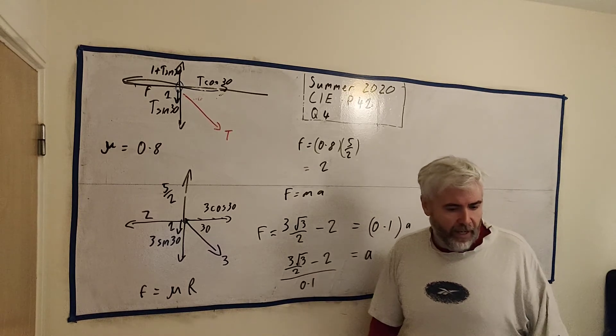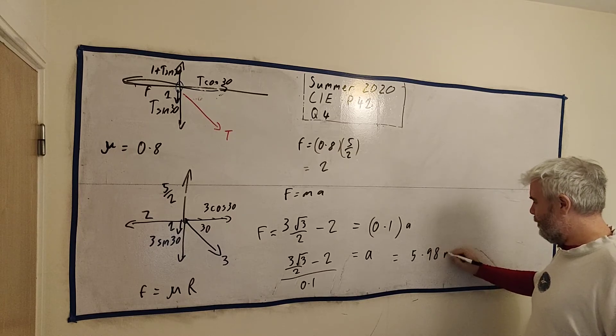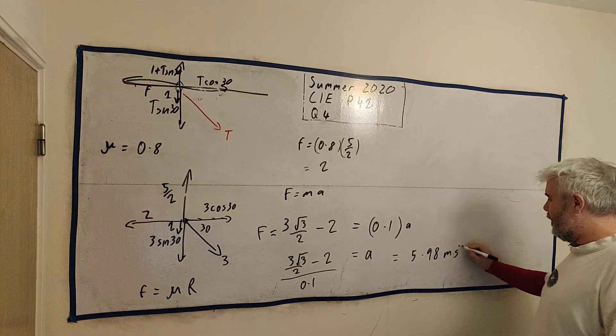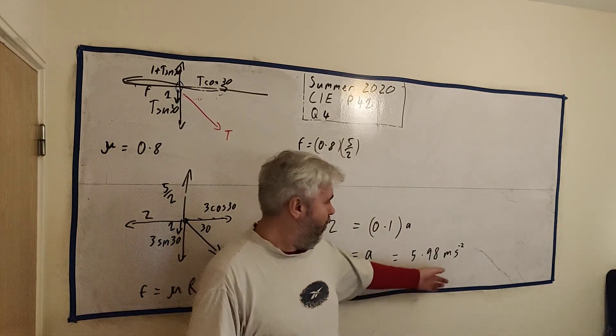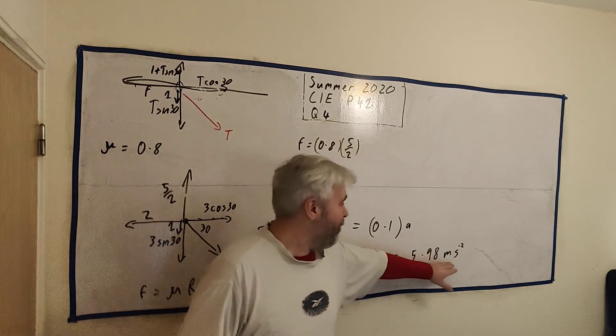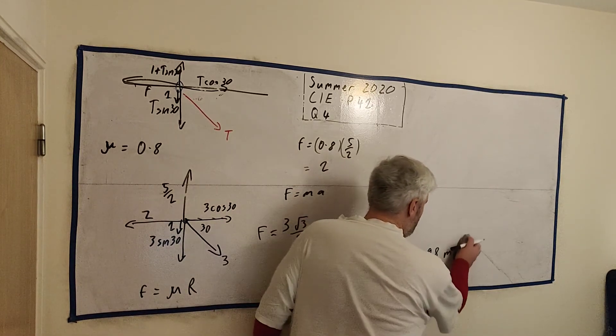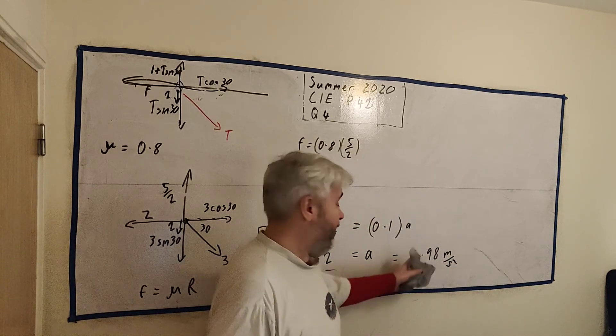Just rearrange it. A must equal 3 times square root of 3 over 2 minus 2 divided by 0.1. Again, put that in a calculator. And you will get 5.98, and that's meters per seconds squared. Or, yeah, per second squared. Or meters multiplied by seconds to the minus 2. Either way, put some units there. You could have it like I wrote, or you could have meters over seconds squared. Either is fine.